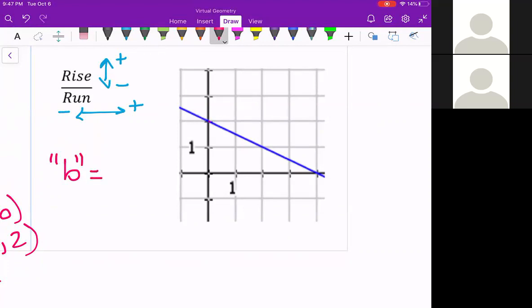And that is where you cross the y axis. My y is the up and down. My x is side to side. So I cross the y axis at (0, 2). So my b is just the 2.